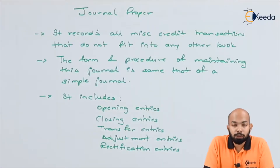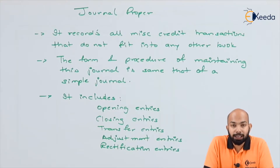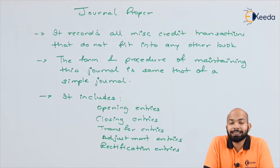When you talk about journal proper, it records all those transactions which don't fit into any other book. That means all those miscellaneous transactions which do not fit into any other subsidiary book — such as purchase, purchase return, sales, sales return, cash book — all these transactions that don't fit into those are recorded under journal proper.